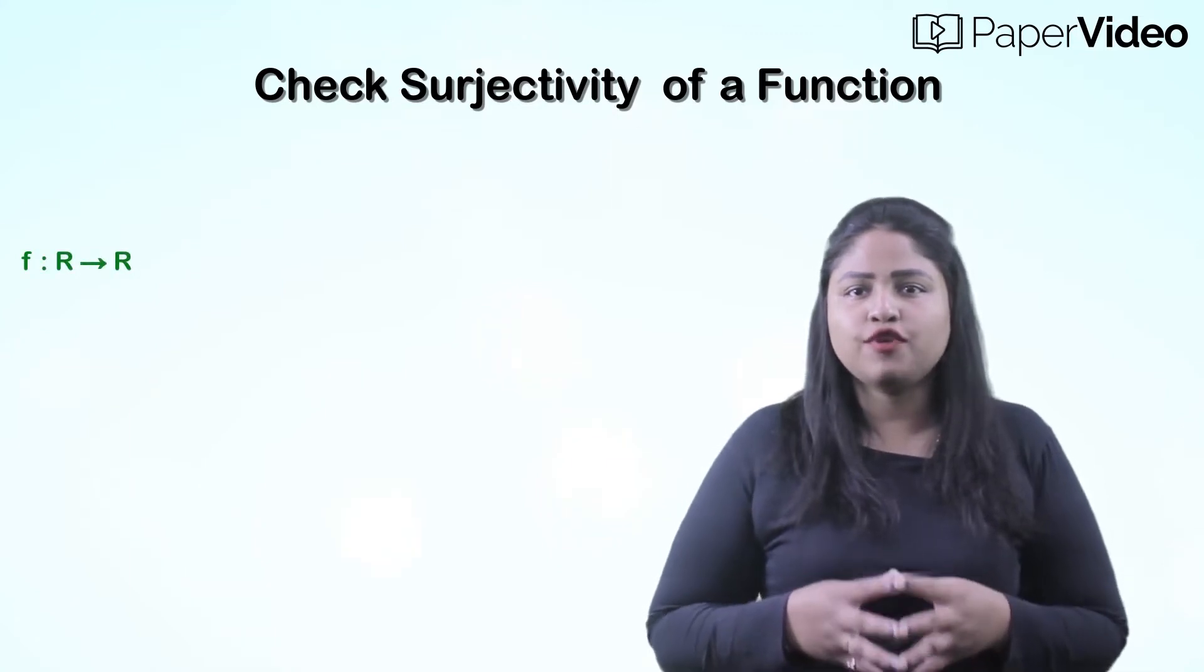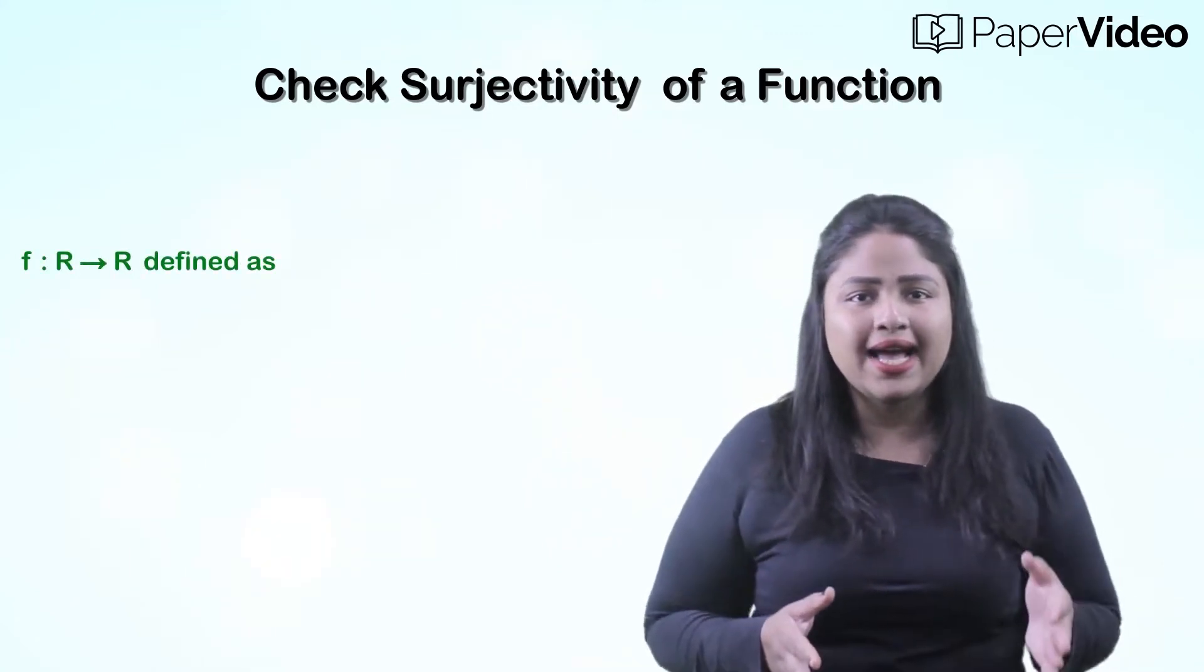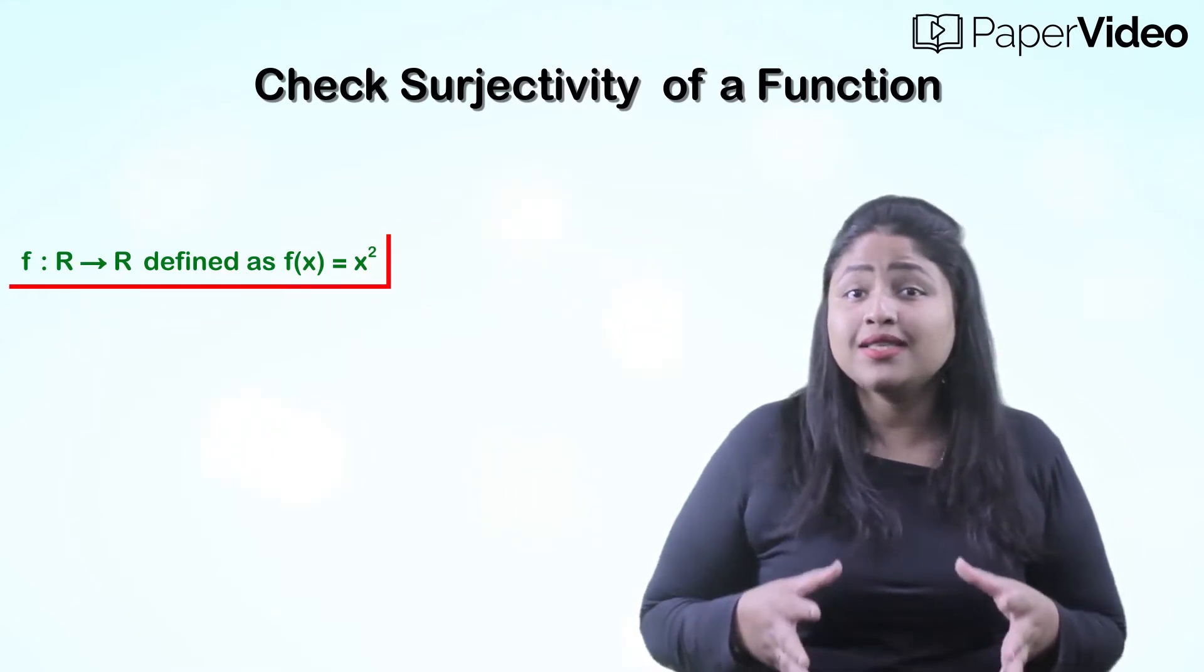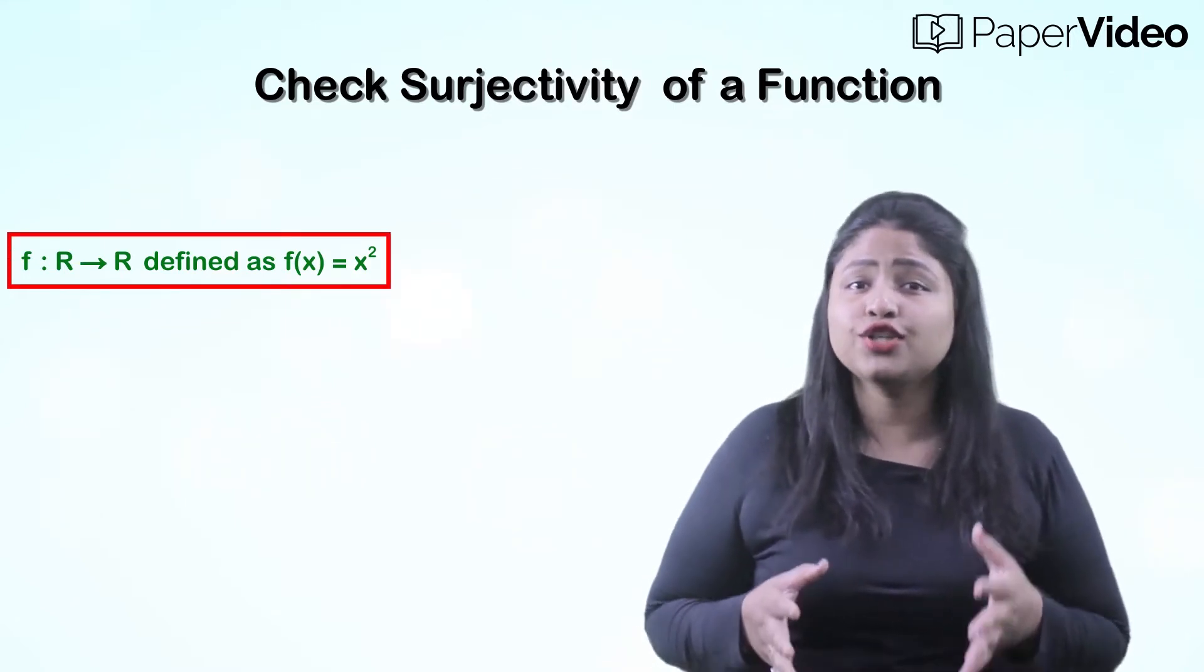Suppose f is a function from R to R defined as f(x) equals to x². Let us check whether this function is an onto function or not.